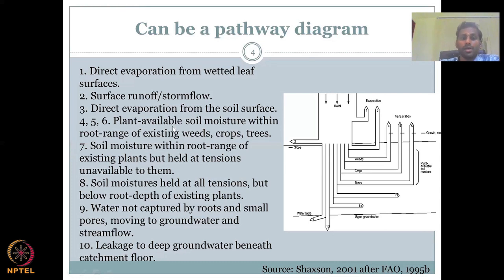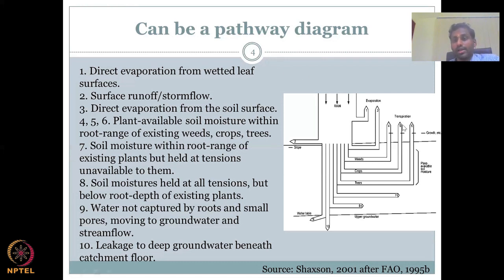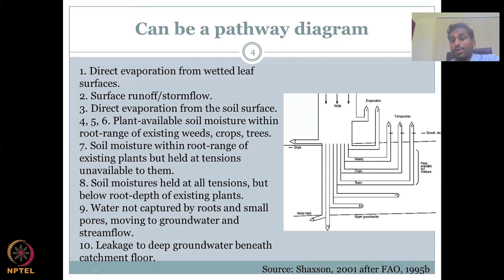Processes four, five, and six relate to plant available soil moisture within the root range of weeds, crops, and trees. After runoff and surface evaporation, water starts to slowly move down into the soil, and plants take it up and transpire. This is the key difference between evaporation and transpiration: evaporation occurs on the surface without plant involvement, whereas transpiration is when the plant takes water from the soil, pumps it to the shoot, and breathes it out. Transpiration is driven by plant growth; runoff is driven by slope.